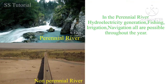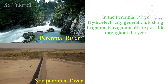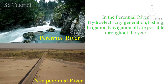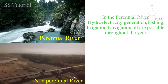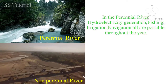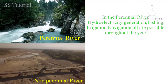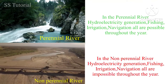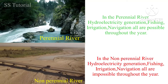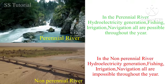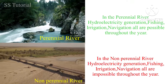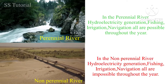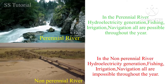In case of perennial rivers, hydroelectricity generation, fishing, irrigation, and navigation are all possible throughout the year, as water is available throughout the year. But hydroelectricity generation, fishing, irrigation, and navigation are all impossible throughout the year in non-perennial rivers, as they remain dry in the dry season.